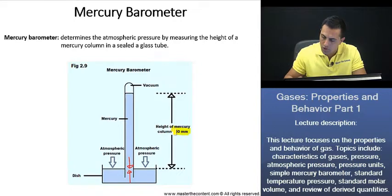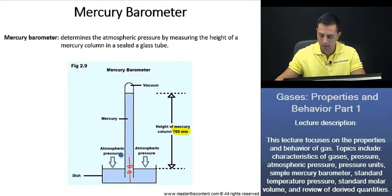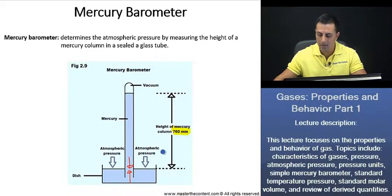Now, one other important point that we should note before we move on to our next slide is that as with varying weather conditions and varying altitudes, that atmospheric pressure is going to change. And as that atmospheric pressure changes, so will the height of the mercury column.